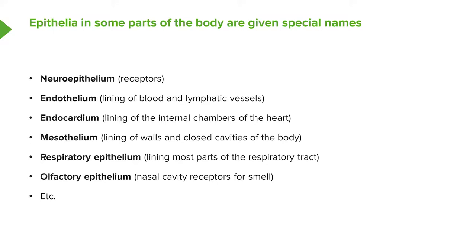Epithelia in some parts of the body are given special names. You may come across terms like endocardium, endothelium, respiratory tract epithelium, mesothelium, and olfactory epithelium. These relate to special names given to epithelia in certain parts of the body, and we'll encounter these in later lectures.